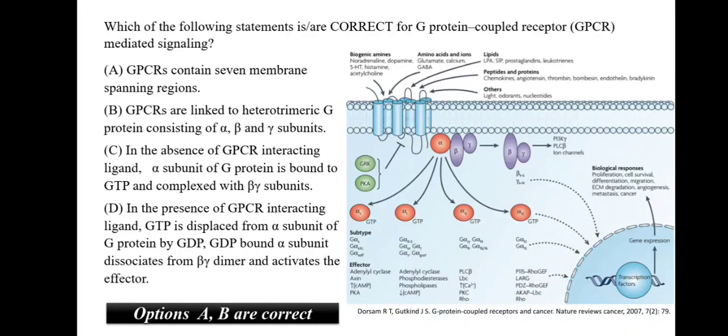Which of the following statement is correct for G protein coupled receptor mediated signaling? To understand this, let us look at GPCR signaling. GPCR is a transmembrane receptor with seven membrane spanning regions. This is associated with a heterotrimeric G protein which has alpha-beta-gamma subunits. This protein when in inactive state is bound to GDP. When the ligand comes and binds to the receptor, the GDP of G protein gets converted into GTP. Here in the given option, only A and B are correct options.